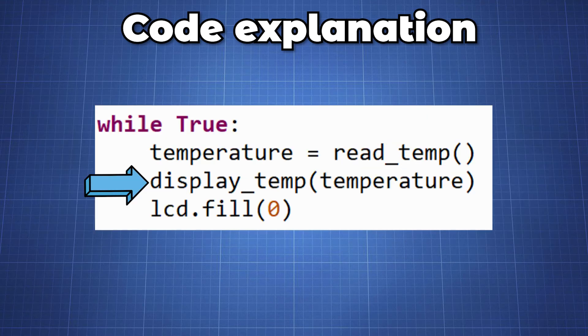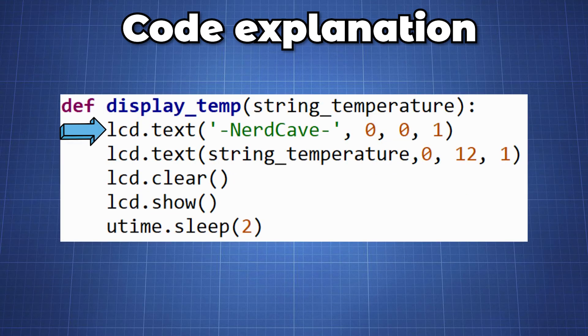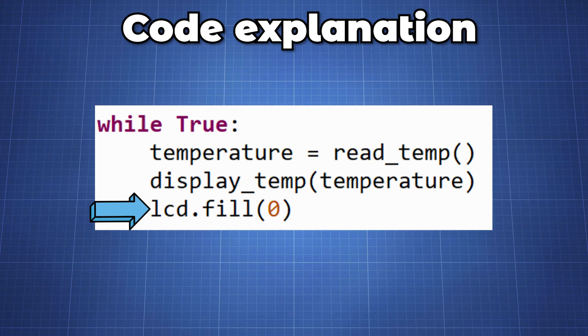The variable is then given to the displayTemp function. Here we use the lcd.text to write the channel name NerdCave. How this work is the first variable is the string, second the x coordinate, third the y coordinate and the last one of the text to be visible or not. We then write the string to our screen and move down the starting y coordinate. Clear the screen first and then show the text on the screen. I added a short delay to see the change in temperature in the shell and then finally we use the lcd.full to erase everything before the screen is updated with a new temperature.